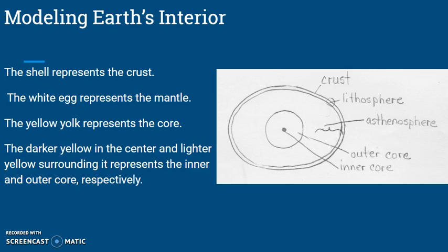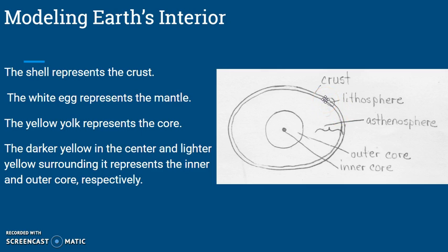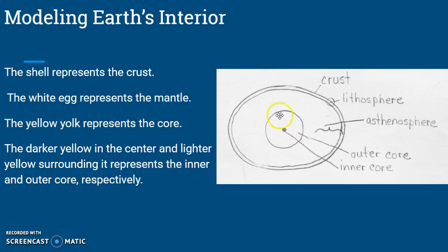When we use an egg to represent the earth's interior, the shell represents the crust. The lithosphere can be represented by the shell — which is the crust — and also that little membrane right underneath the shell. The egg white, the white part of the egg, represents the mantle, and the top part of that would be the asthenosphere. The yolk, the yellow part, represents the core. The darker yellow in the center would be the inner core, and the lighter yellow around the outside would be the outer core.